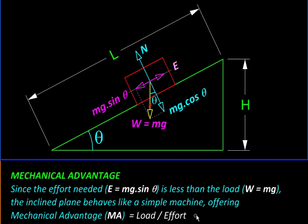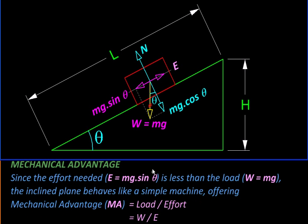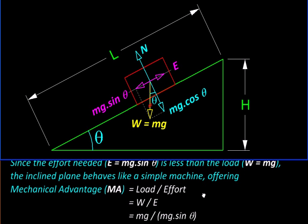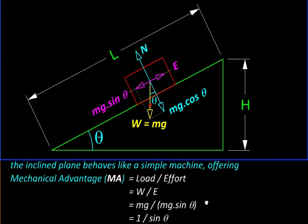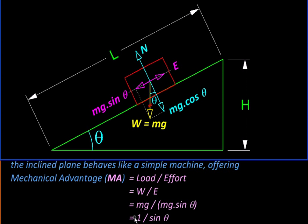So we can calculate the mechanical advantage that is load upon effort which is equal to w divided by e. Since w is mg and effort e is mg sin theta, this weight mg gets cancelled and we will get mechanical advantage as 1 upon sin theta.